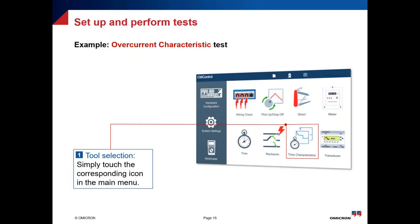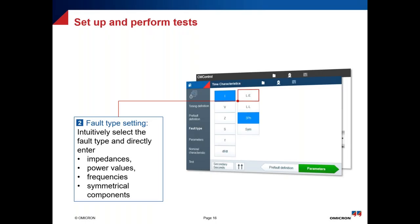Here is an example showing how the overcurrent characteristic can be tested. You select the time characteristic, which is already implemented internally with all kinds of curves, and then save the test report with graphical test results. It also enables testing with different fault types — phase-to-phase, phase-to-earth, and symmetrical and unsymmetrical components. You can also test impedance for distance relay protection, under-impedance relays, and power direction. We have symmetrical frequencies for load shedding and frequency protection, positive and negative sequence components, and rate of change of frequency (df/dt), which is commonly used in load shedding.